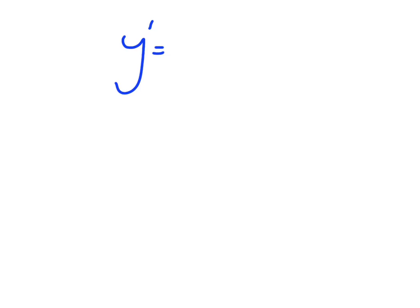So, we originally had this, 1 half x to the negative 1 half. So, you might just want to write that with a radical. So, you could write it as 1 over 2 root x.